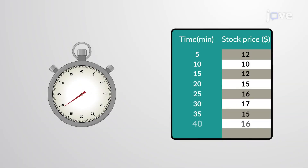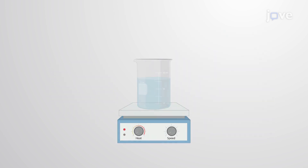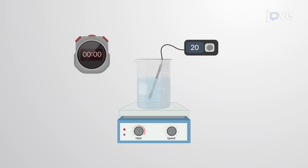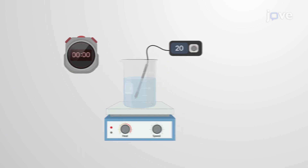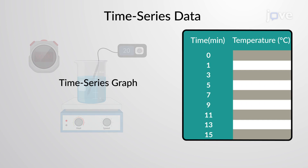Quantitative data collected at different time points are called time series data. For example, consider the increase in water temperature when heated. Such data sets with the time factor can be visualized using the time series graph.